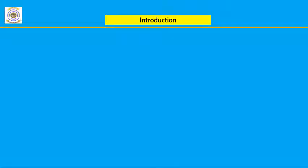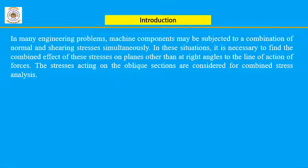Module 2: Analysis of Stress and Strain. Introduction — in many engineering applications, machine components may be subjected to a combination of normal and shearing stresses combined together or simultaneously. In this situation it is necessary to find the combined effect of these stresses on planes other than at right angles to the line of action of force. The stresses acting on the oblique section are considered for combined stress analysis.